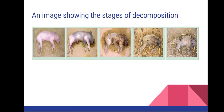It is important to know that there are factors that affect decomposition. The first factor is temperature. Warmer temperatures accelerate the process of decomposition whereas colder temperatures slow it down, and if it is cold enough, it stops it altogether. Decomposition is fastest between 70 to 99 degrees Fahrenheit. Temperature also affects insect succession, which affects how quickly the body is broken down.